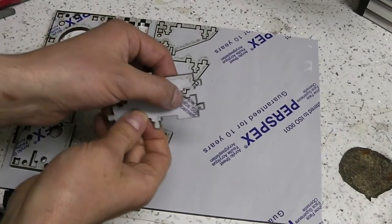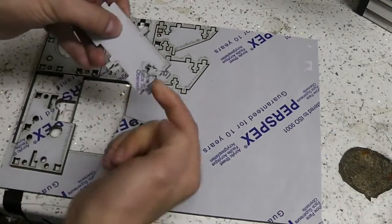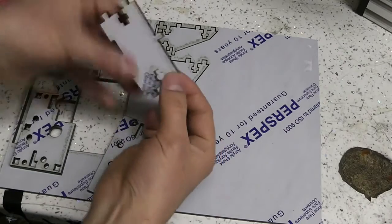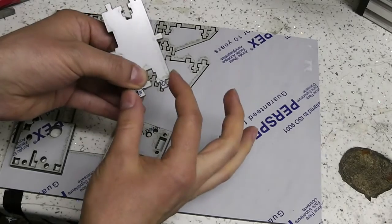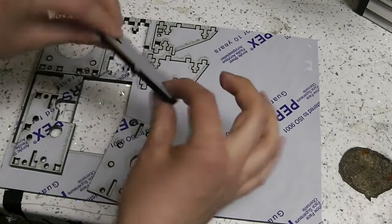So these things here are nut traps so the bolts will hopefully, four millimetre bolts will come through the side of the piece that fits on here and hold it all together.